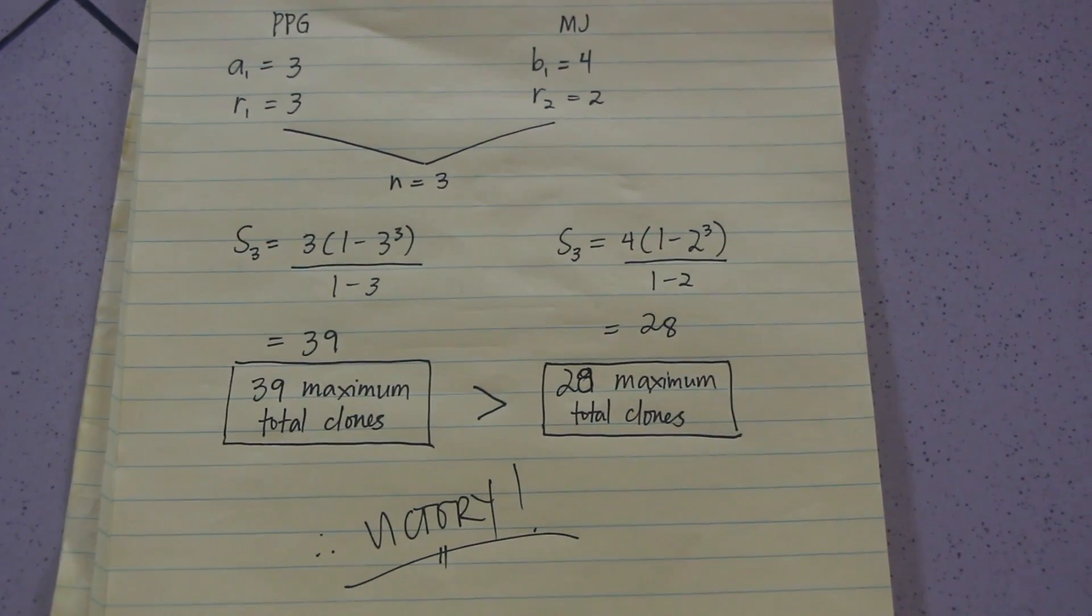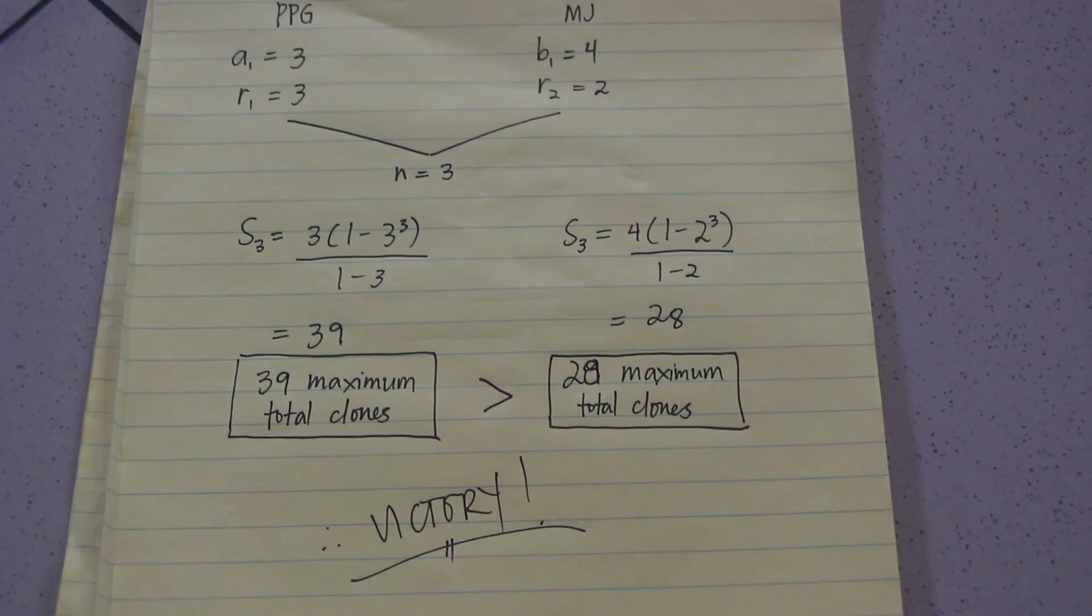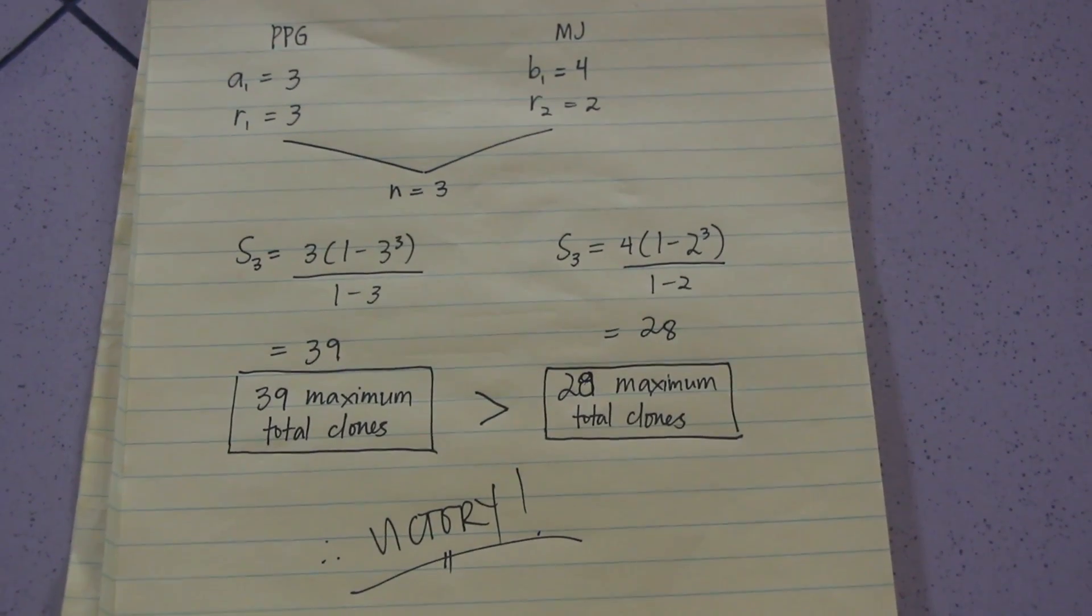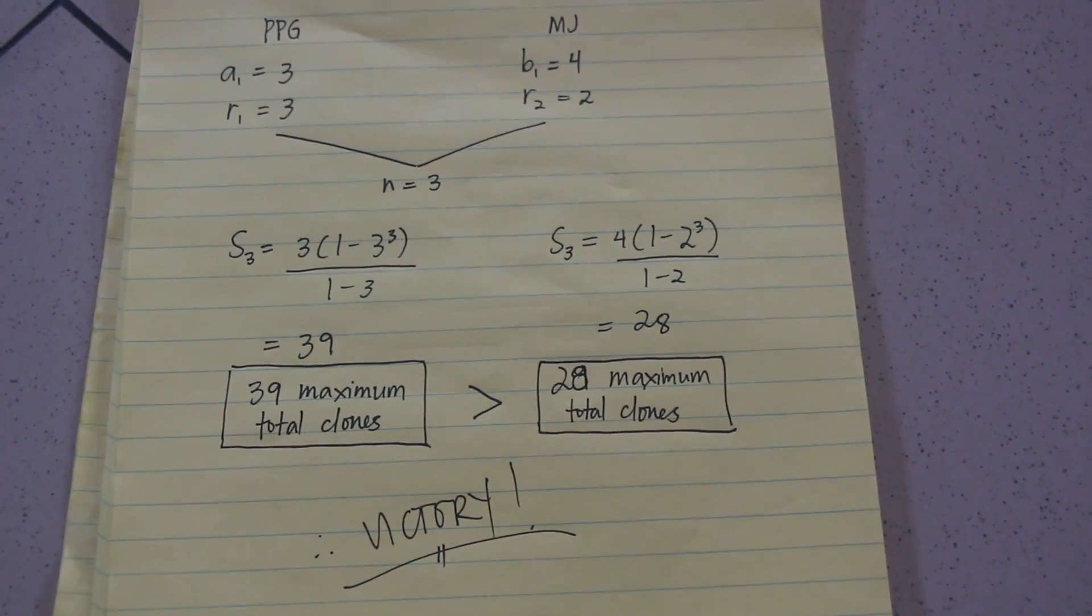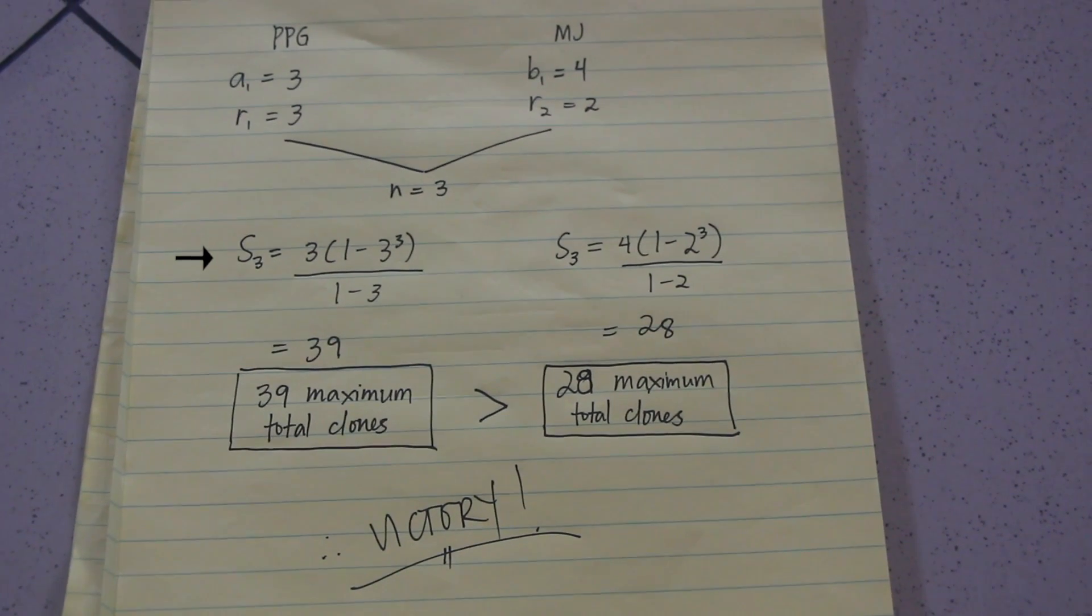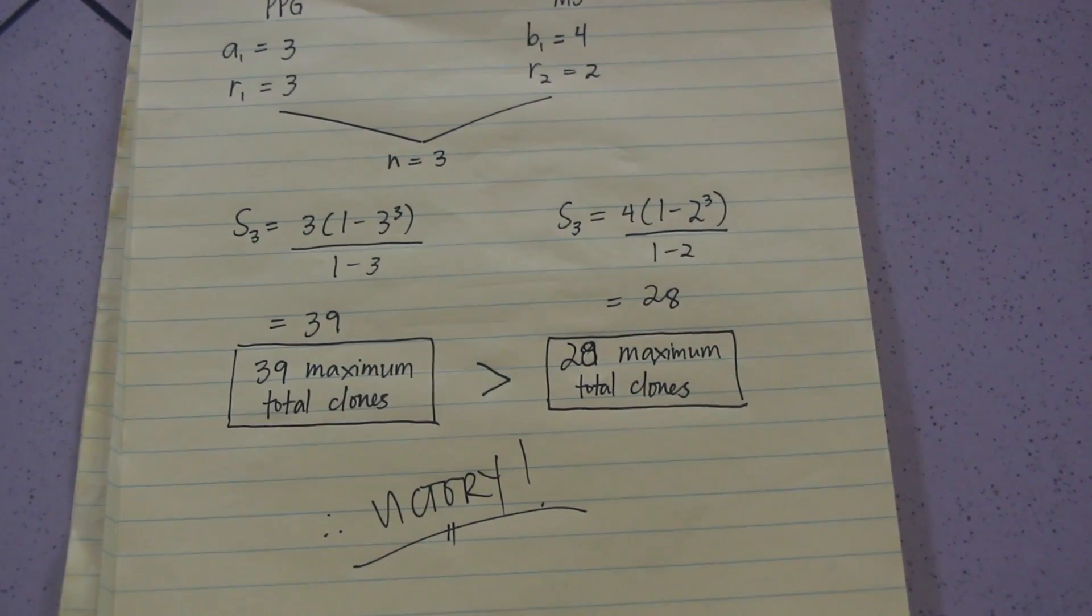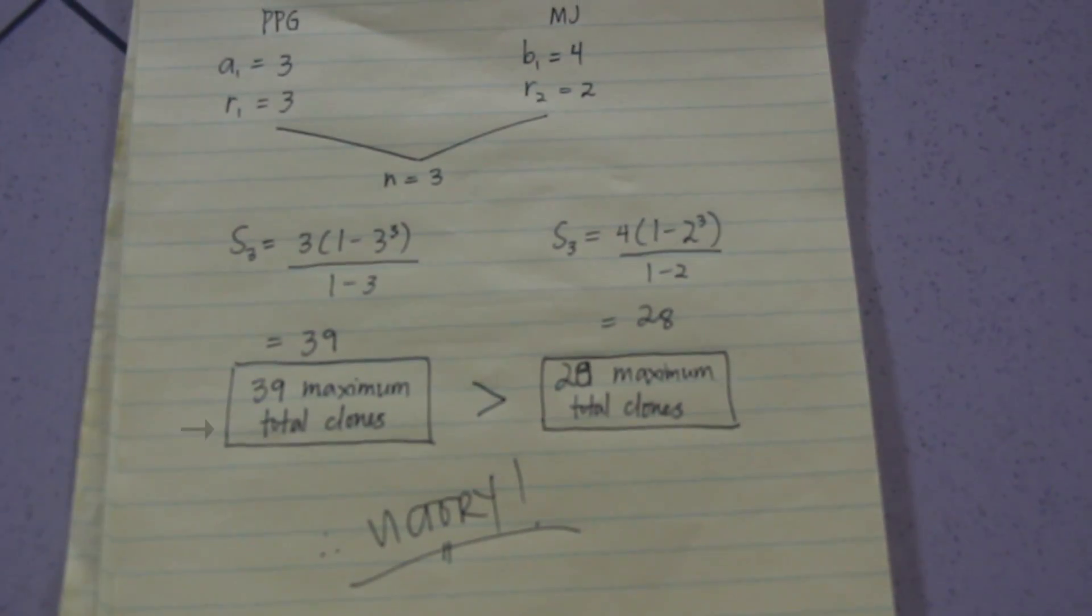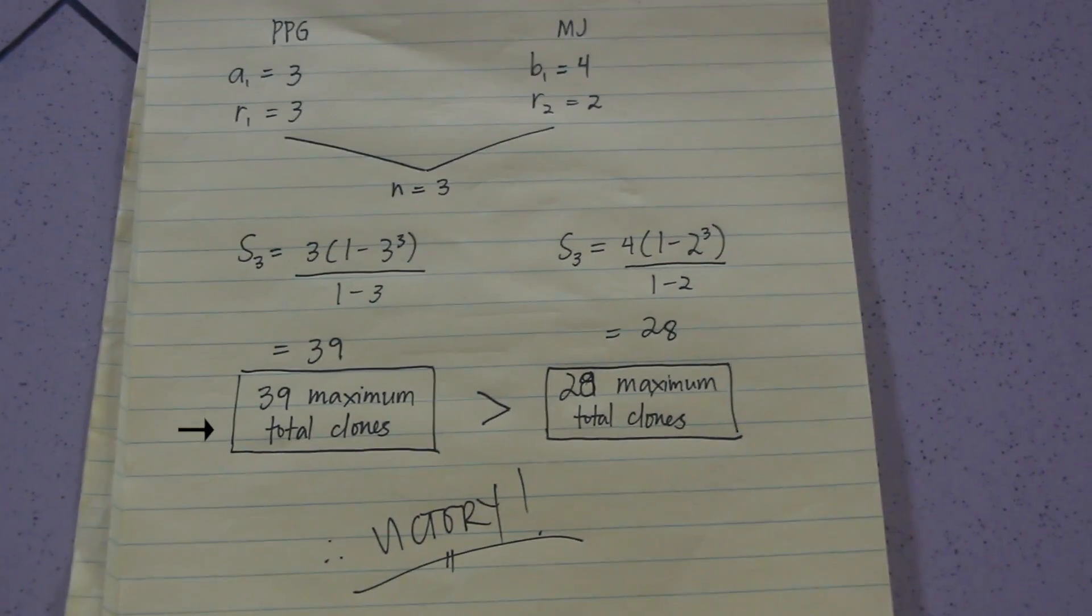Let's write them in equations and compute for the sum of the first N terms of each, or the maximum number of total clones. For our side, we have 3 quantity 1 minus 3 cube over 1 minus 3. Simplifying further this expression, we get 39, or 39 maximum of total clones.